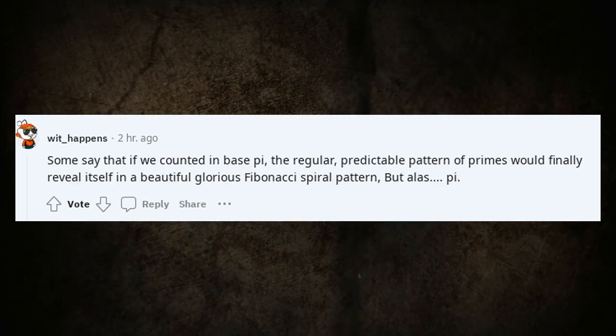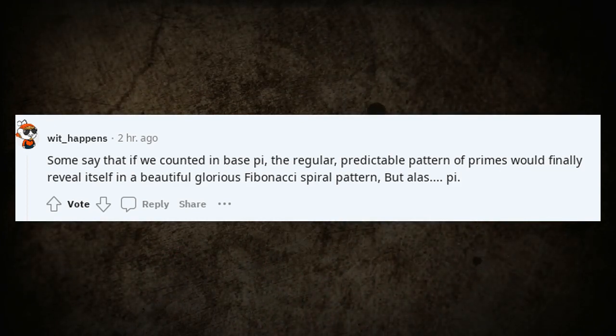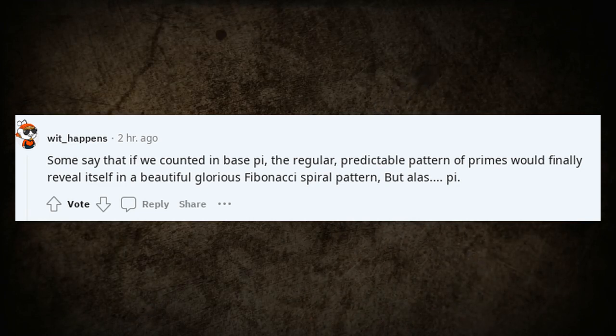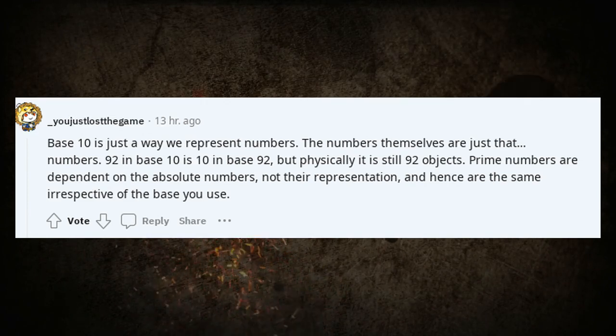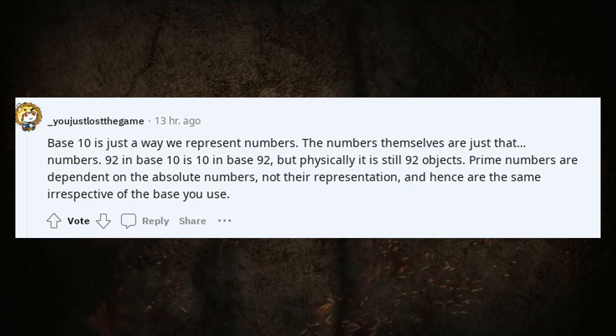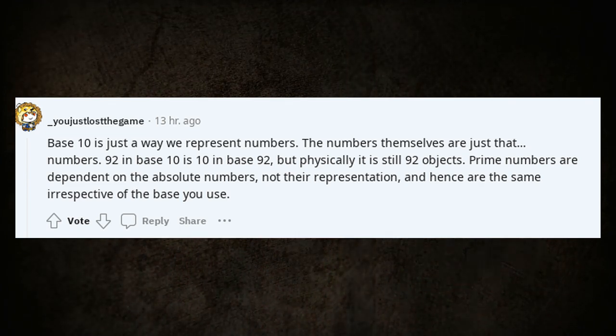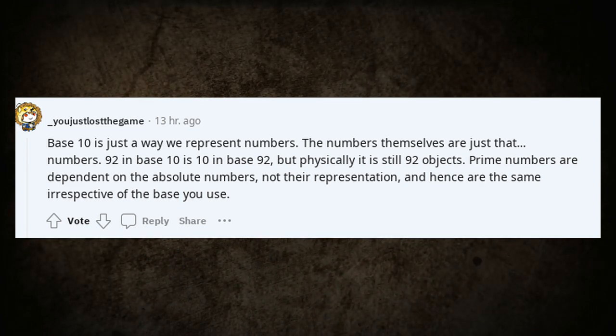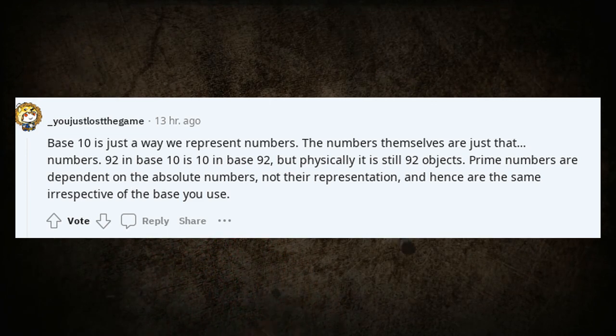Some say that if we counted in base pi, the regular, predictable pattern of primes would finally reveal itself in a beautiful glorious Fibonacci spiral pattern. But alas! Pi. Base 10 is just a way we represent numbers. The numbers themselves are just that. Numbers. 92 in base 10 is 10 in base 92. But physically it is still 92 objects. Prime numbers are dependent on the absolute numbers, not their representation. And hence are the same irrespective of the base you use.